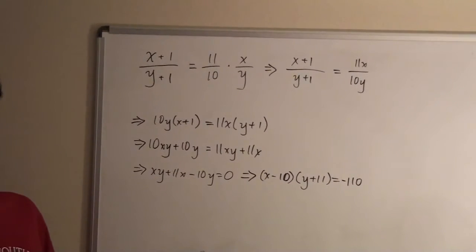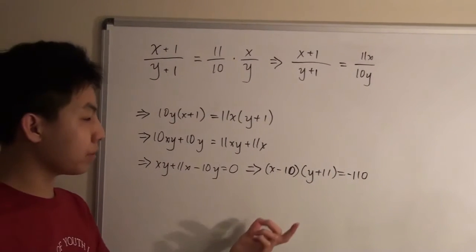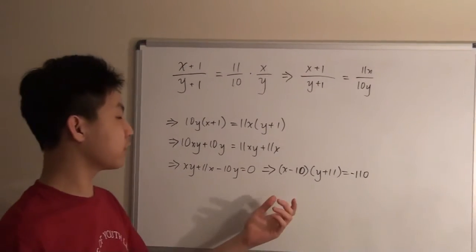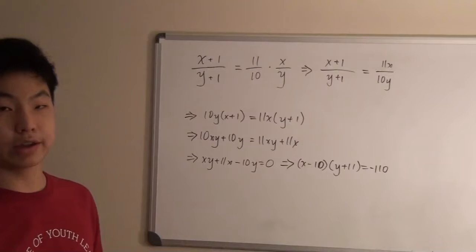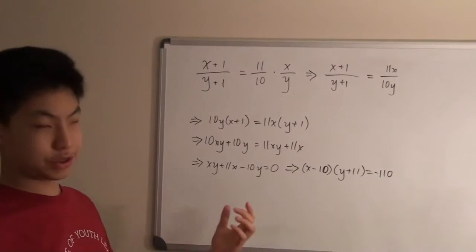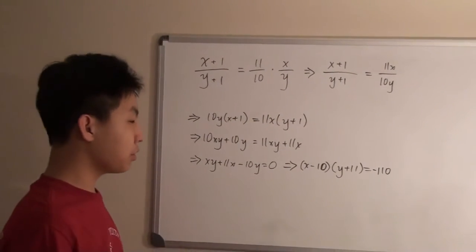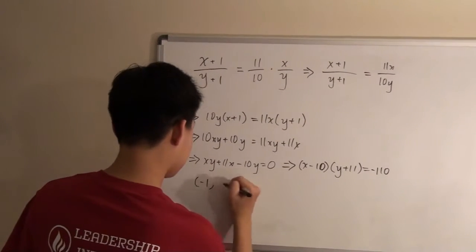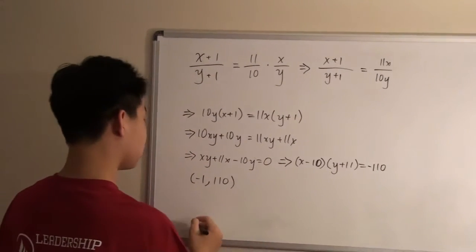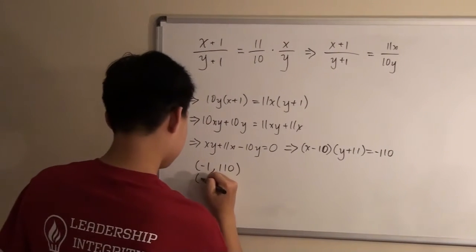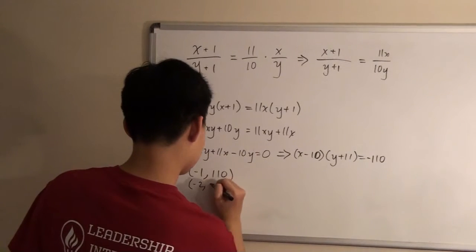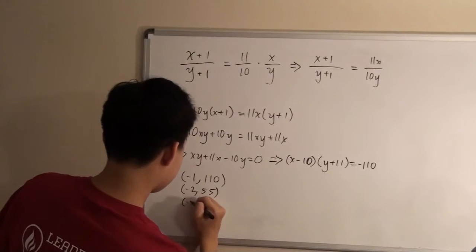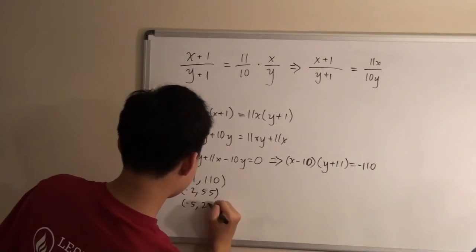So from this, we can see that we will try to pair up numbers or plug them in for x and y and try to find the pairs of numbers that work for this equation. And the ones that work are negative 1, 110; negative 2, 55; and negative 5, 22.